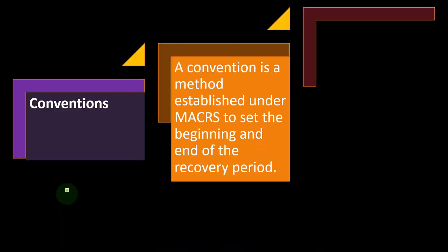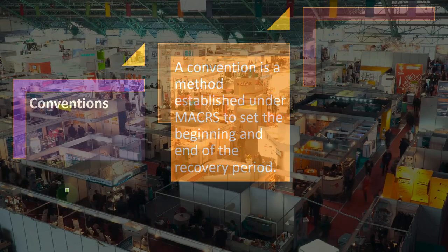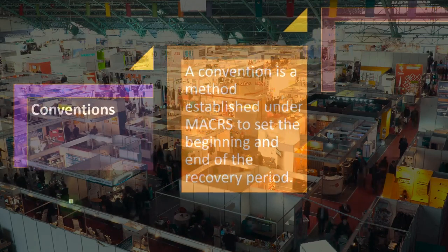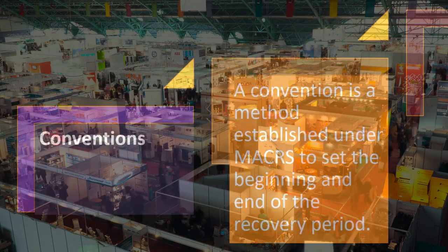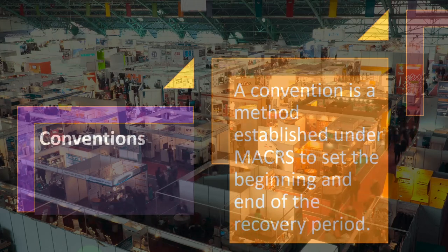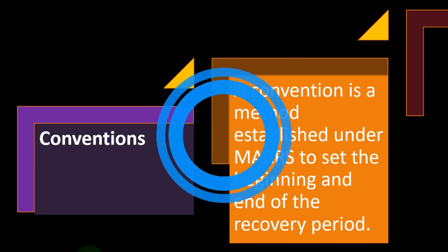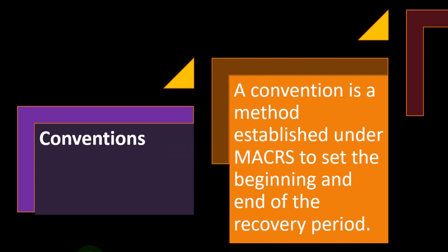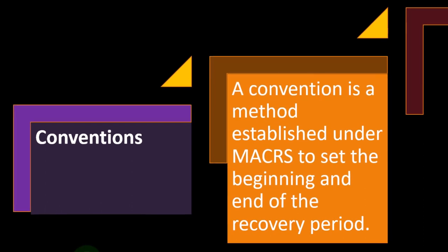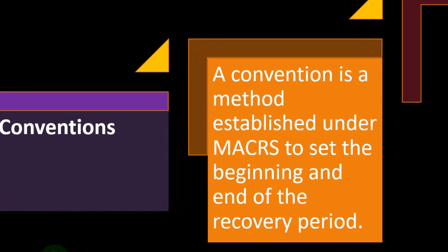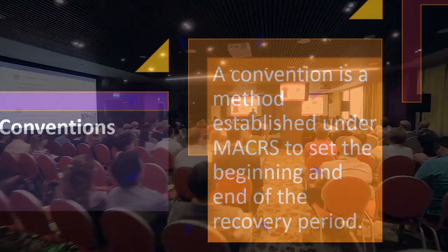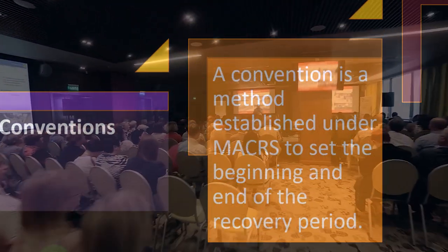We're now continuing on with the conventions. Conventions! We talked about MACRS as the primary concept we're going to use to depreciate property. It still uses general accounting concepts like straight-line versus double-declining balance, and then we have a convention involved. That basically asks: can we simplify things instead of saying I bought something on February 21st and having to calculate a partial month? We say can we assume we purchased it in the middle of the year, quarter, or month?